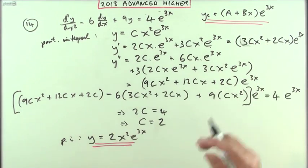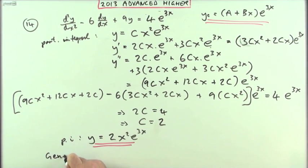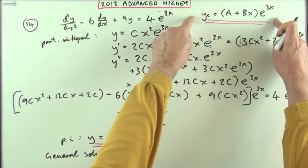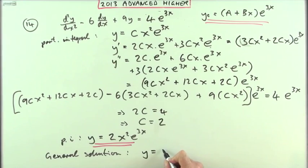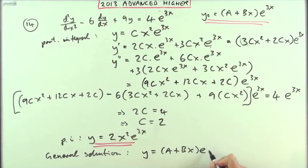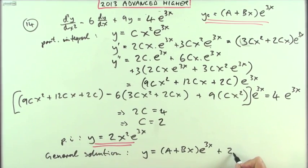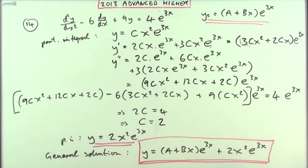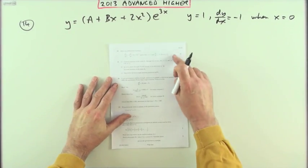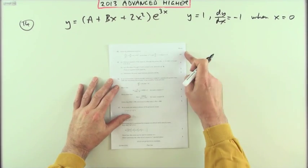Taking the two parts together, you can get the general solution. My general solution will be the complementary function plus the particular integral: y = (A + Bx)e^(3x) + 2x²e^(3x). That's quite nice and neat. As if that wasn't enough, you're going to have to continue before you're paid your 11 marks. You have to find the particular solution that satisfies these initial conditions.